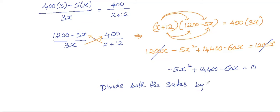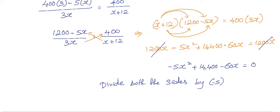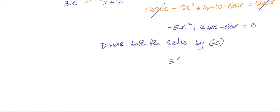We'll come up with minus 5X squared plus 14400 minus 60X. If we divide by minus 5 on both sides, we'll get X squared plus 12X minus 2880 equals zero.